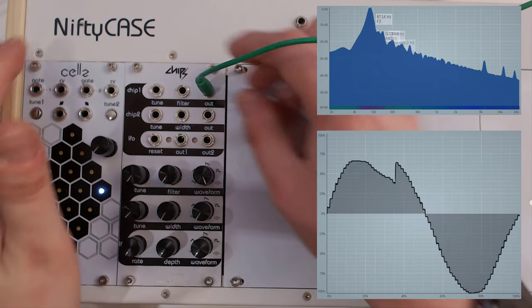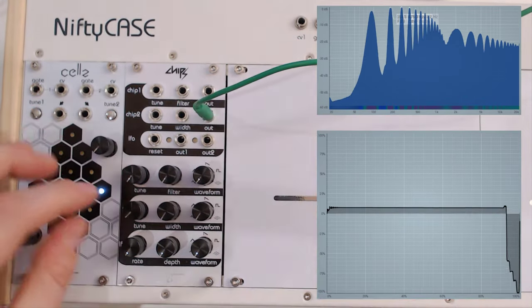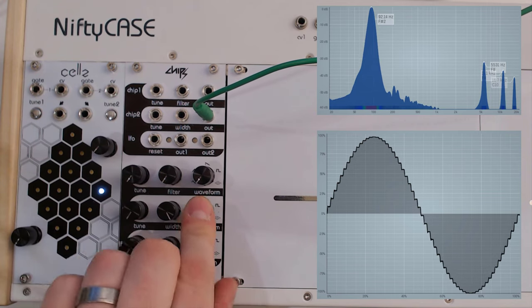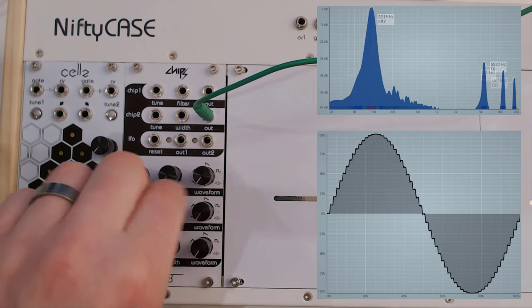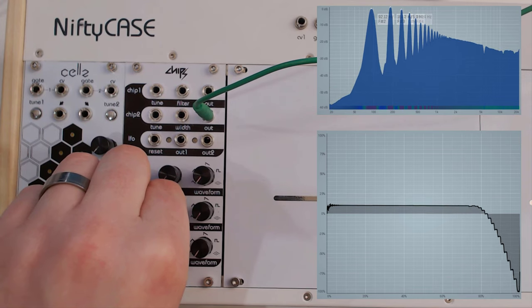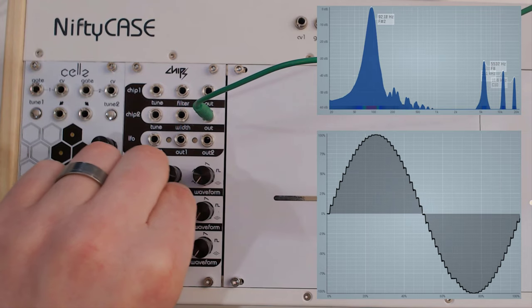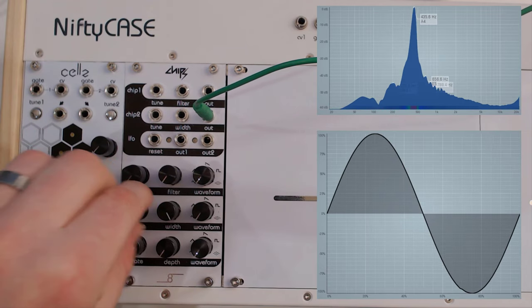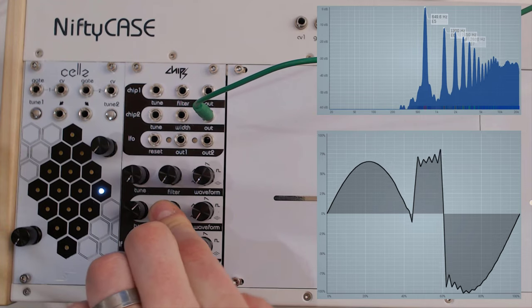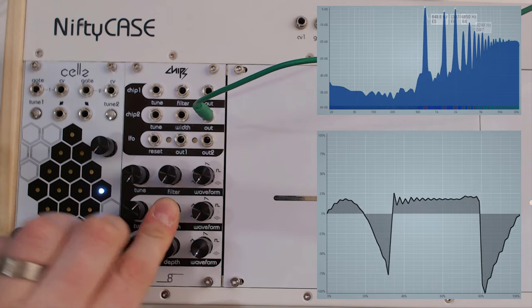That's chip number one. Let's go to chip number two. I've put the width all the way down, got it on the sine form, and this already shows you what you can do. Every waveform can be eaten up by the width, and this gives it so much potential. How many oscillators with a sine wave can you really chop up like this? It's a nice, gritty sound.